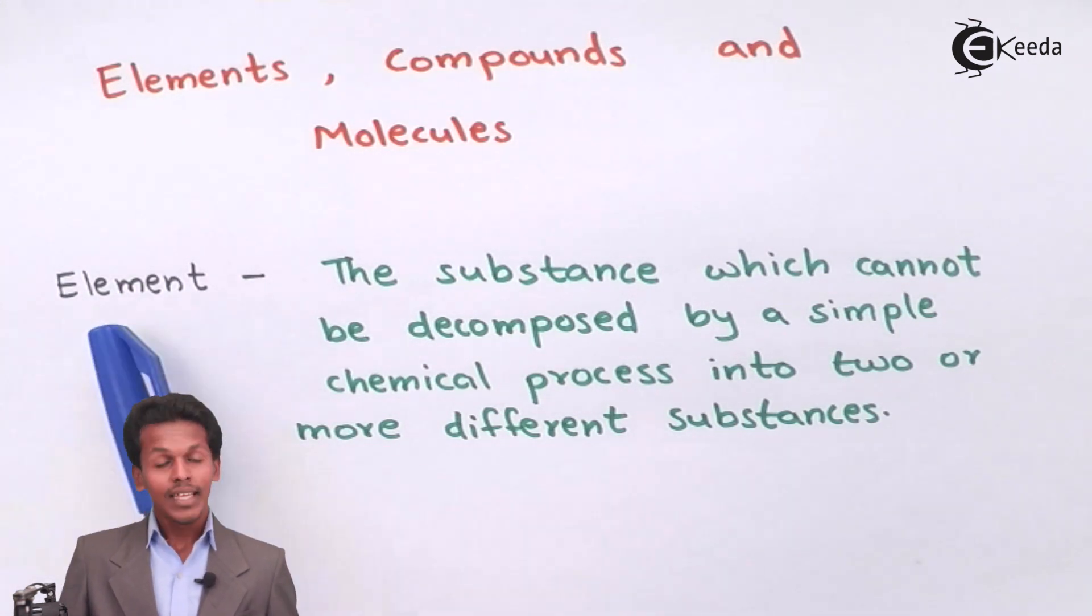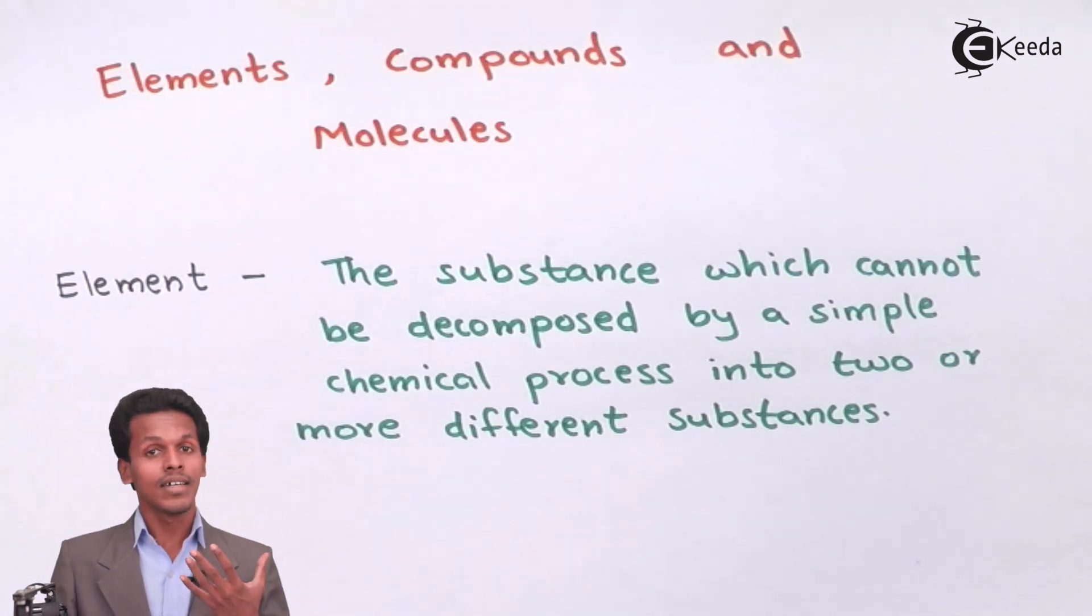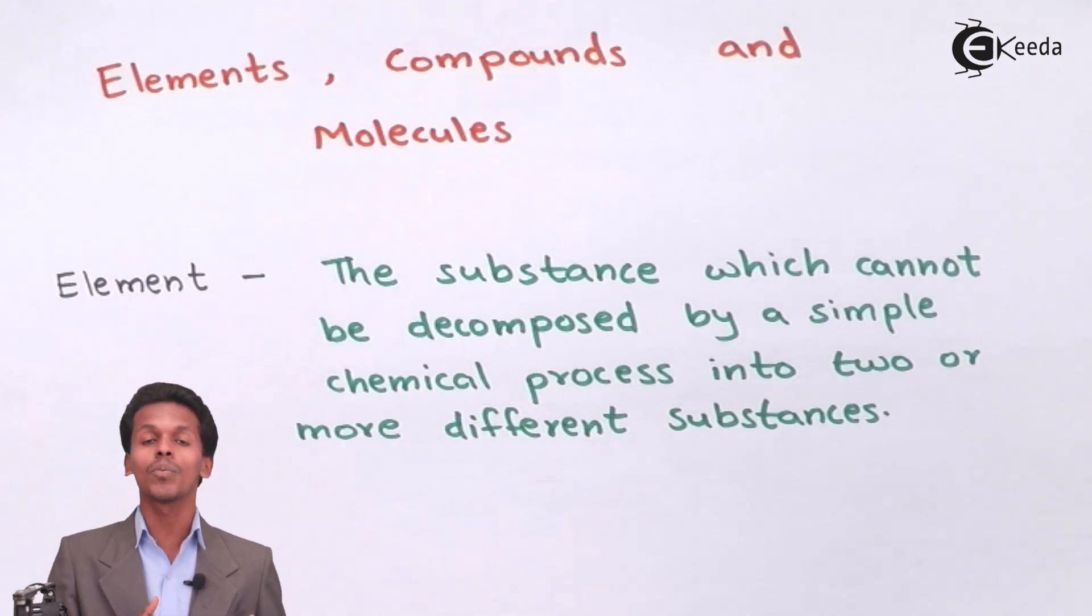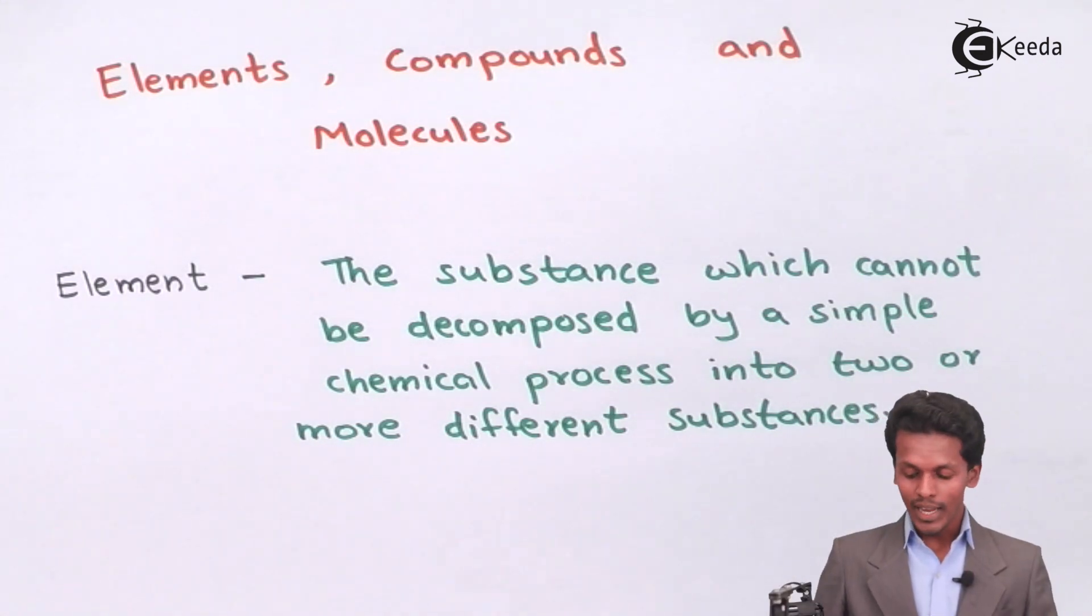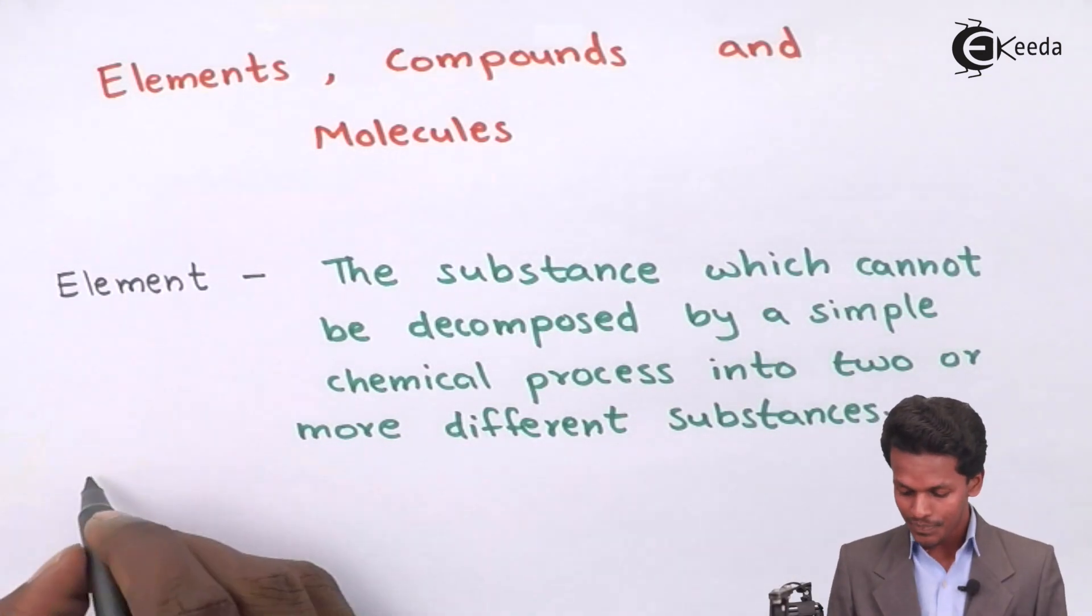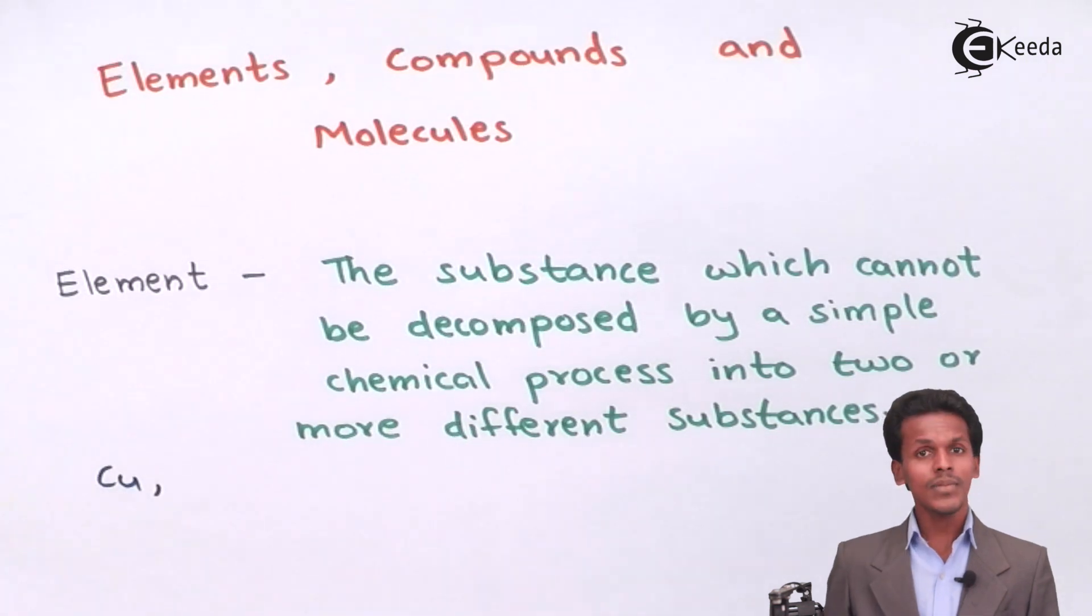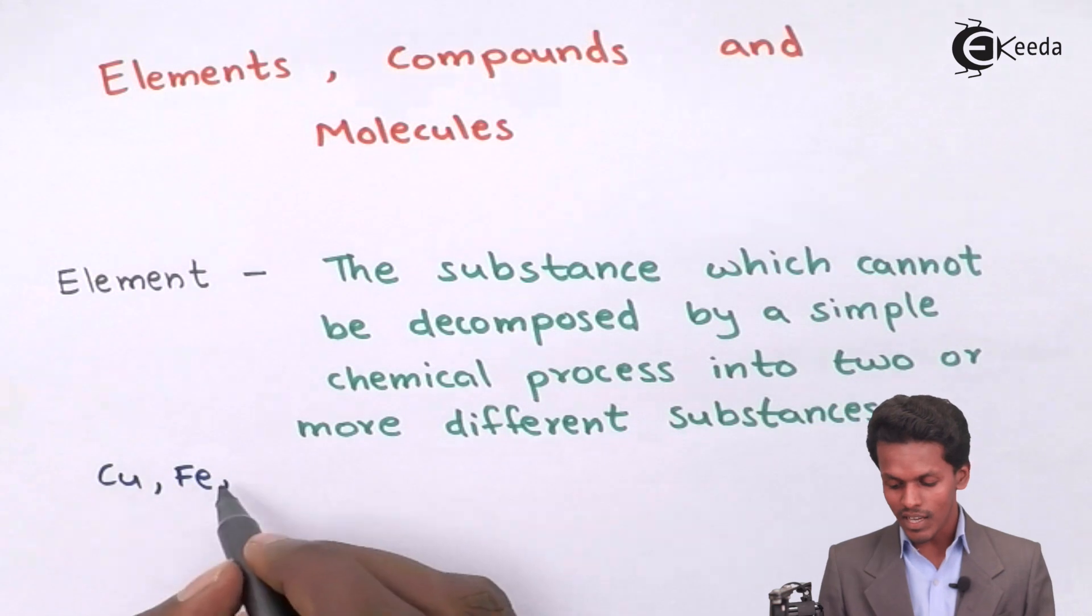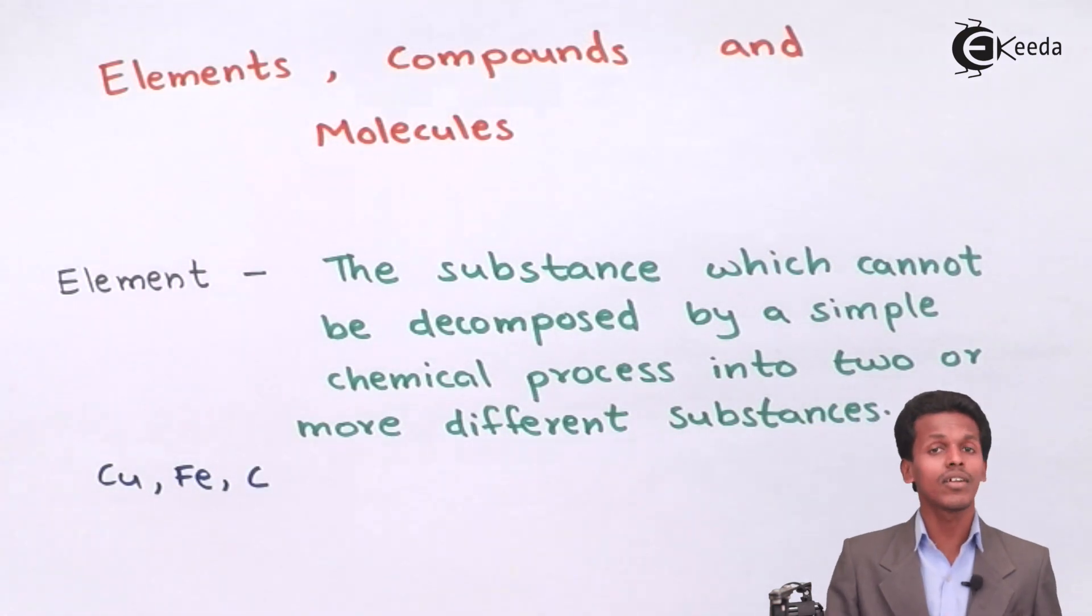The word is very easy to understand that any substance that cannot be decomposed into two or more new substances will be said to be an element. Therefore I would write the examples as copper, iron, and carbon, oxygen. So these kinds of substances are known as elements.